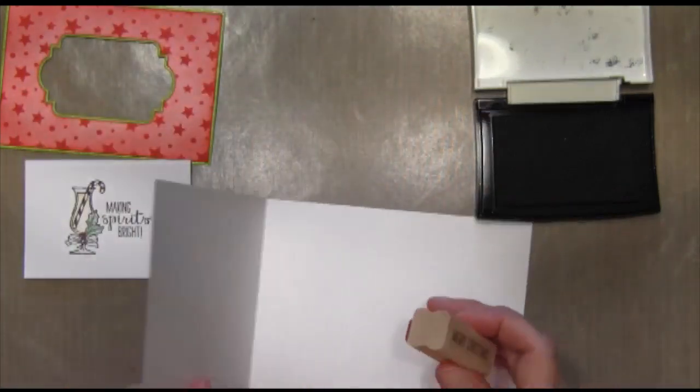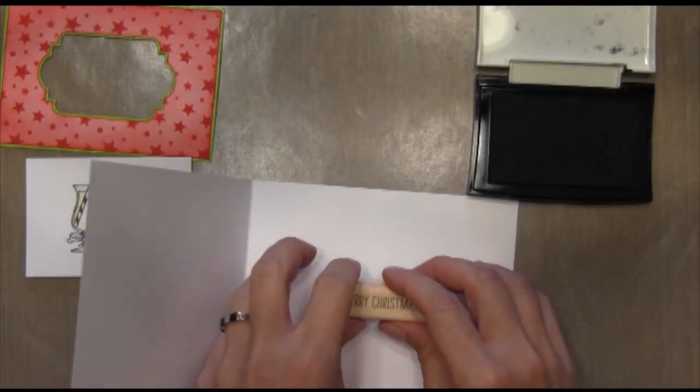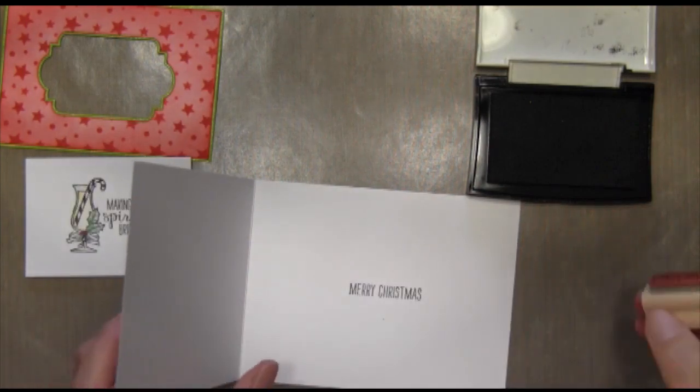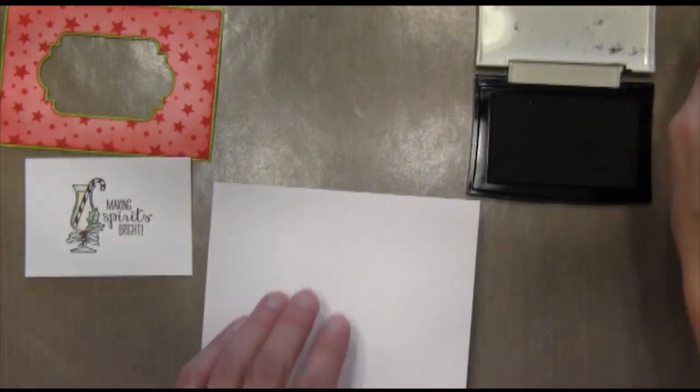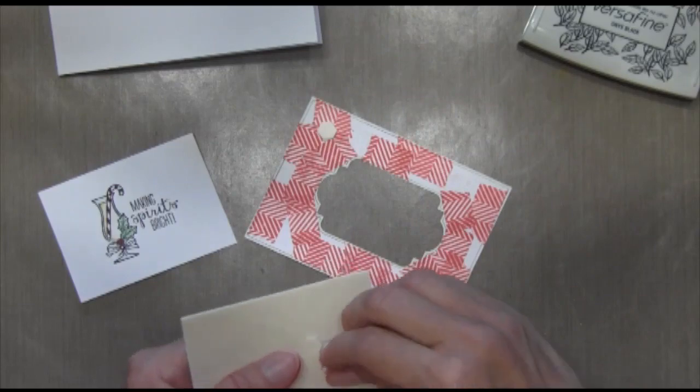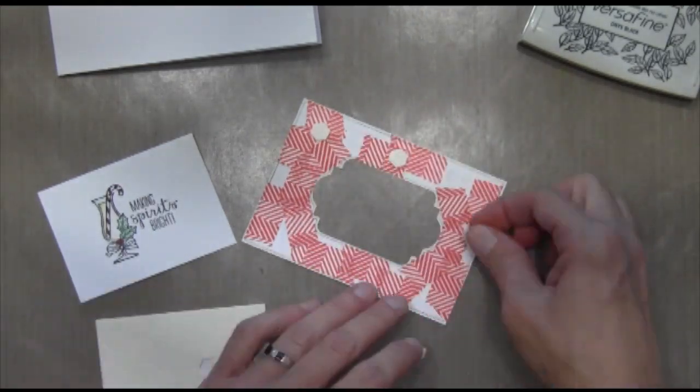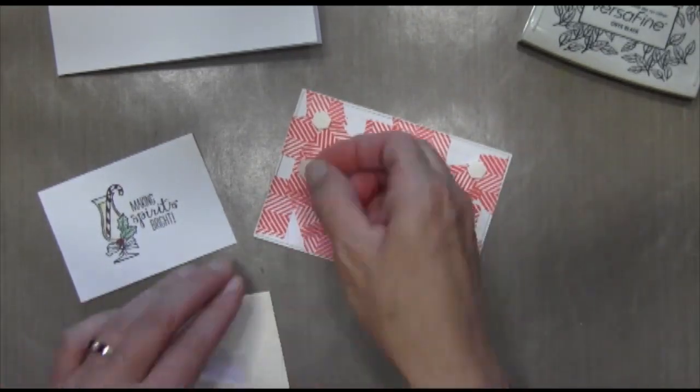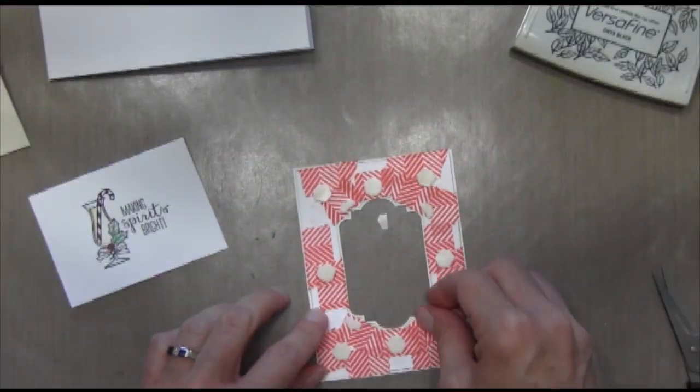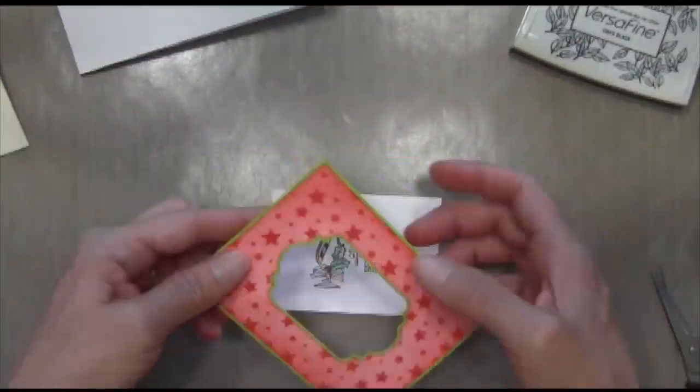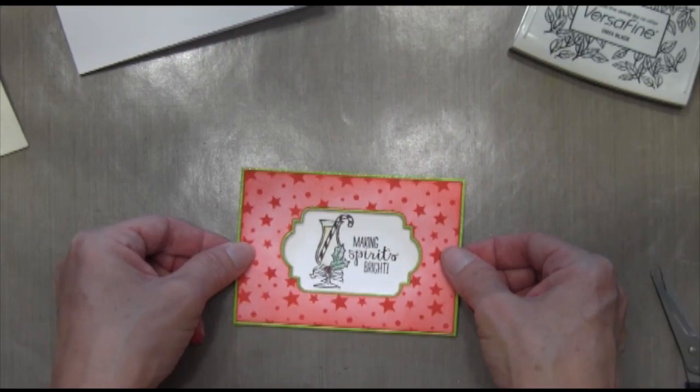I almost did it the wrong way, then I realized my card was going in the opposite direction. There is a sentiment for each of the different cards in the same stamp set. Now I'm going to adhere my panel to my glass here. I'm just using some foam dimensionals by Stampin' Up. I'm just going to lay it on top.